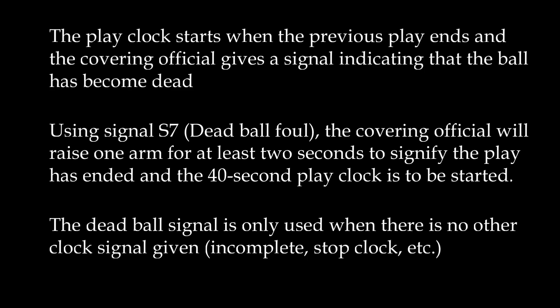The referee or back judge will start the play clock when the previous play ends and the covering official gives a signal indicating the ball has become dead. Signal S7 is the signal referees give for a dead ball — one arm raised in the air for at least a couple of seconds. If you're a wing, you're mainly the ones giving that signal. That lets the back judge or referee know that you've called the play dead and that they should start the 40-second play clock.